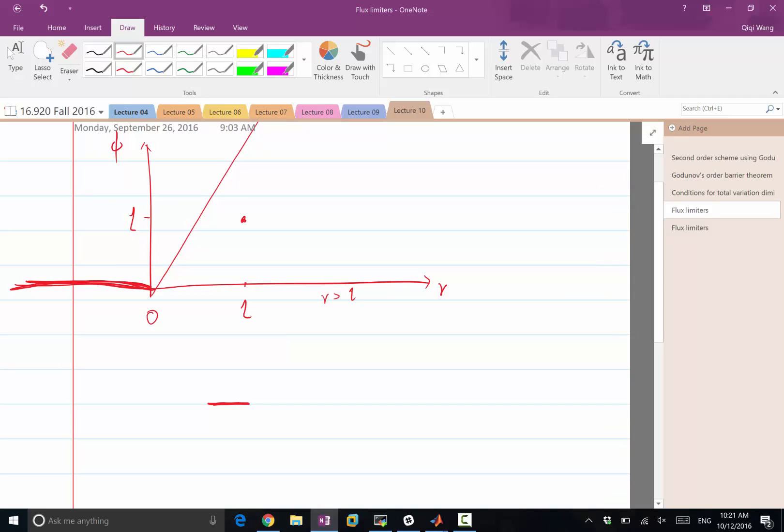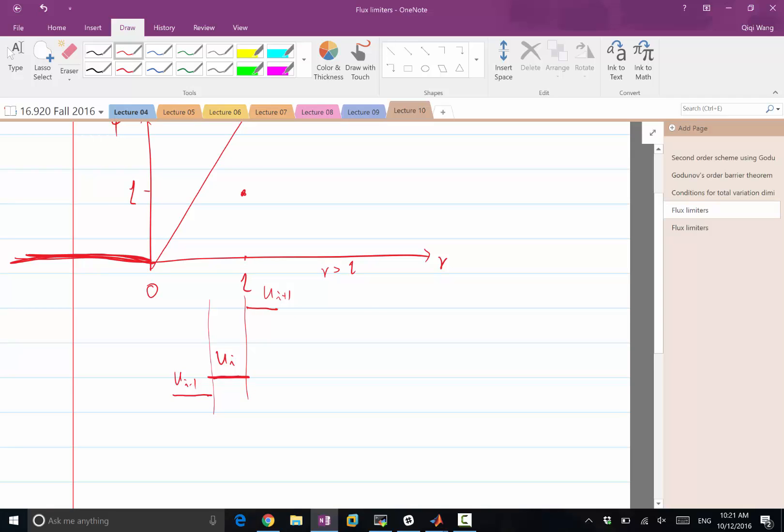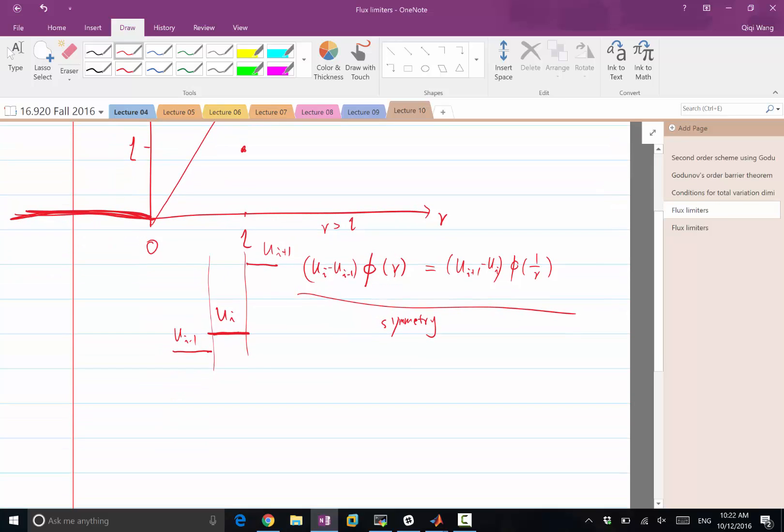So, for r greater than 1, we have conditions we want to satisfy is the so-called symmetry of the flux reconstruction scheme. So, when we try to compute φ of r times ui minus ui minus 1, we want it to be the same as φ of 1 over r multiplied by u plus 1 minus ui. So, that gives us a symmetric scheme. That is, when we flip this x-axis, so this is symmetry, because if we consider the x-axis to go that way...